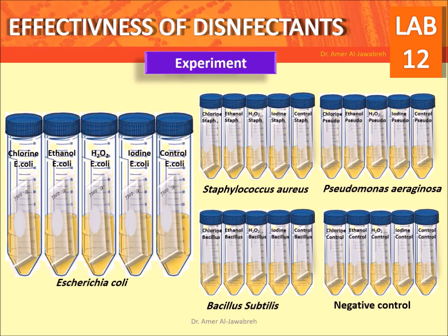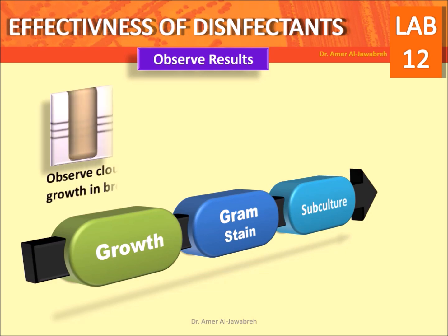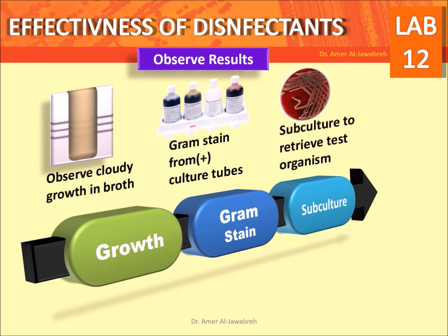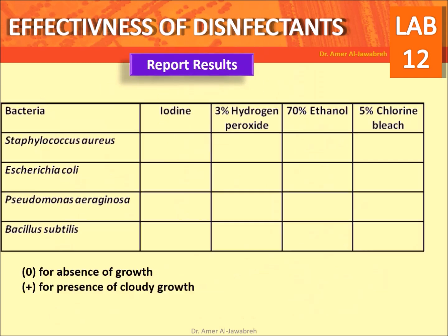Close tubes loosely and incubate for 24 hours at 37°C. Observe results: look for cloudy growth in broth, Gram stain from positive culture tubes, and subculture to retrieve the test organism. If the retrieved organism is different from the test organism, report contamination. Use the provided form to report results.